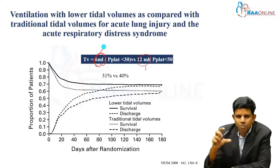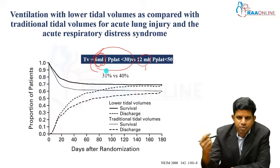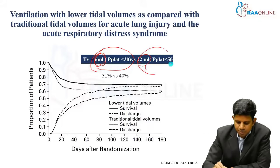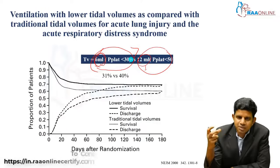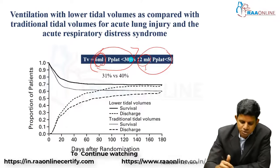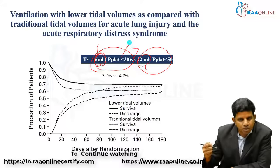What is the problem with this study? The group with lower tidal volumes had better outcomes — but the question is: was this better outcome due to the 6 ml/kg tidal volume, or was it because of the lower plateau pressure limit of 30?